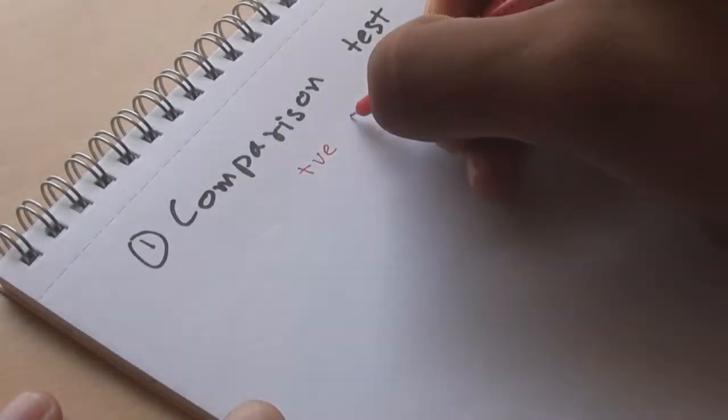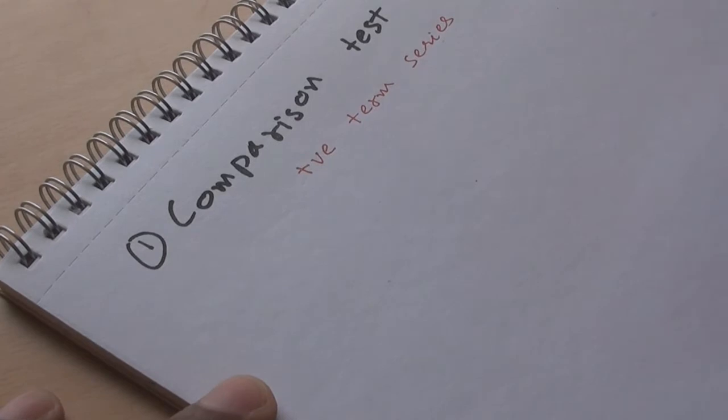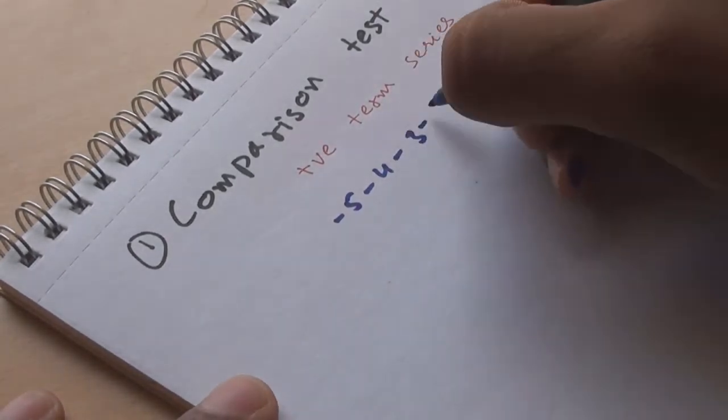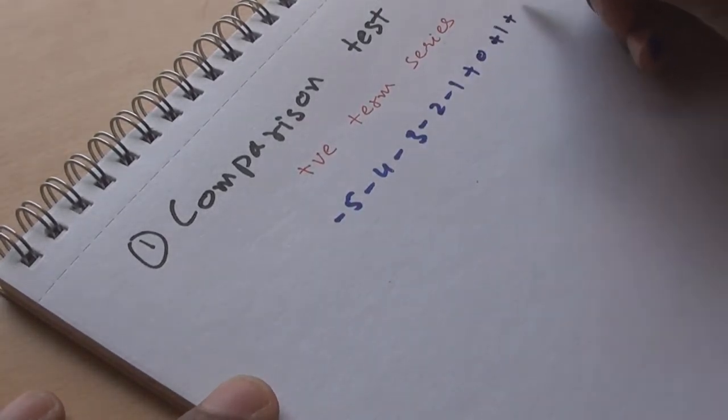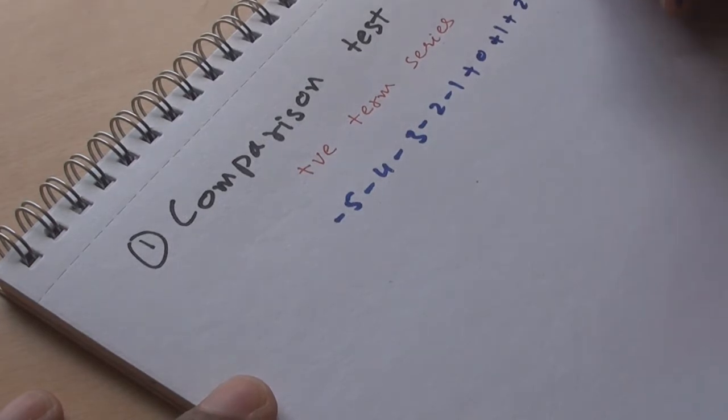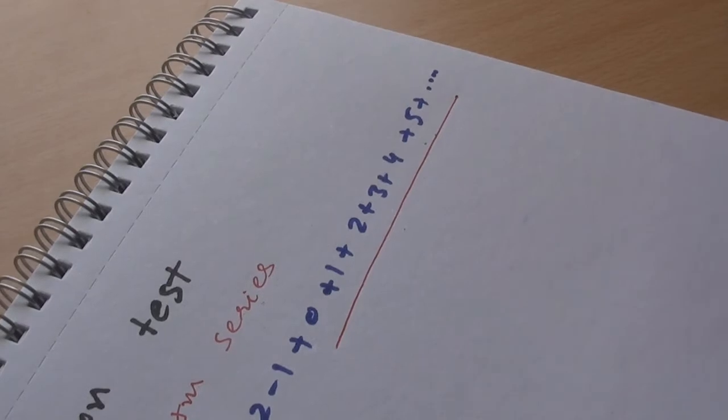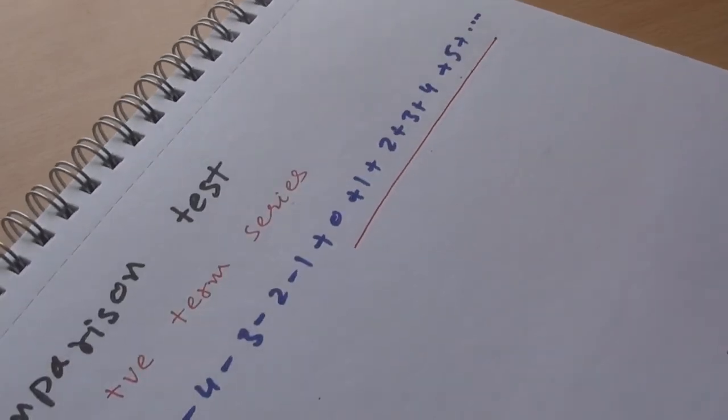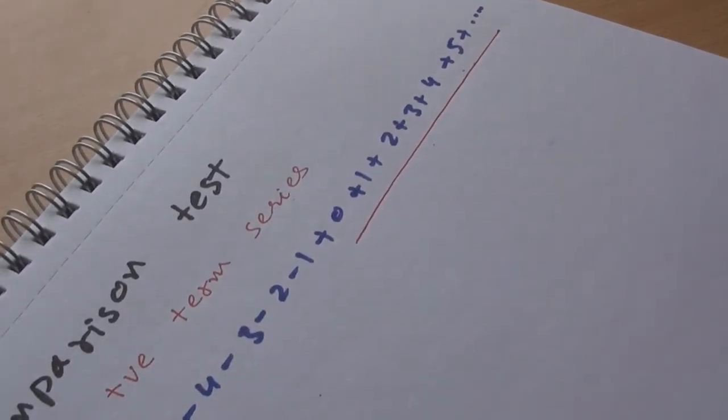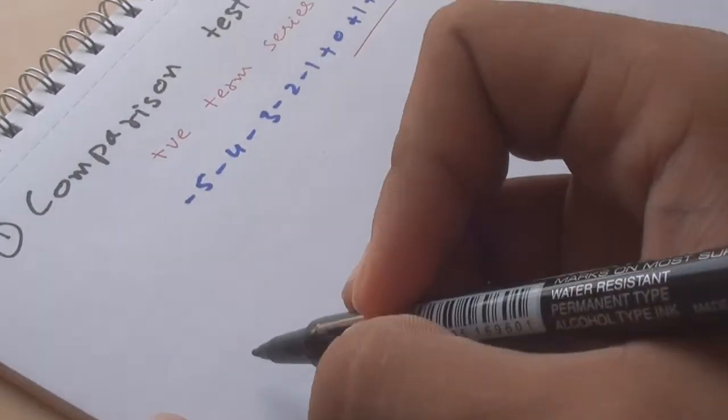The comparison test. First, we need to know what positive term series are. An infinite series in which all the terms after some finite number of terms are positive. For example, the series -5, -4, -3, -2, -1, 0, +1, +2, +3, +4, +5 and so on is a positive term series because after a few terms, positive or not, it gets positive.